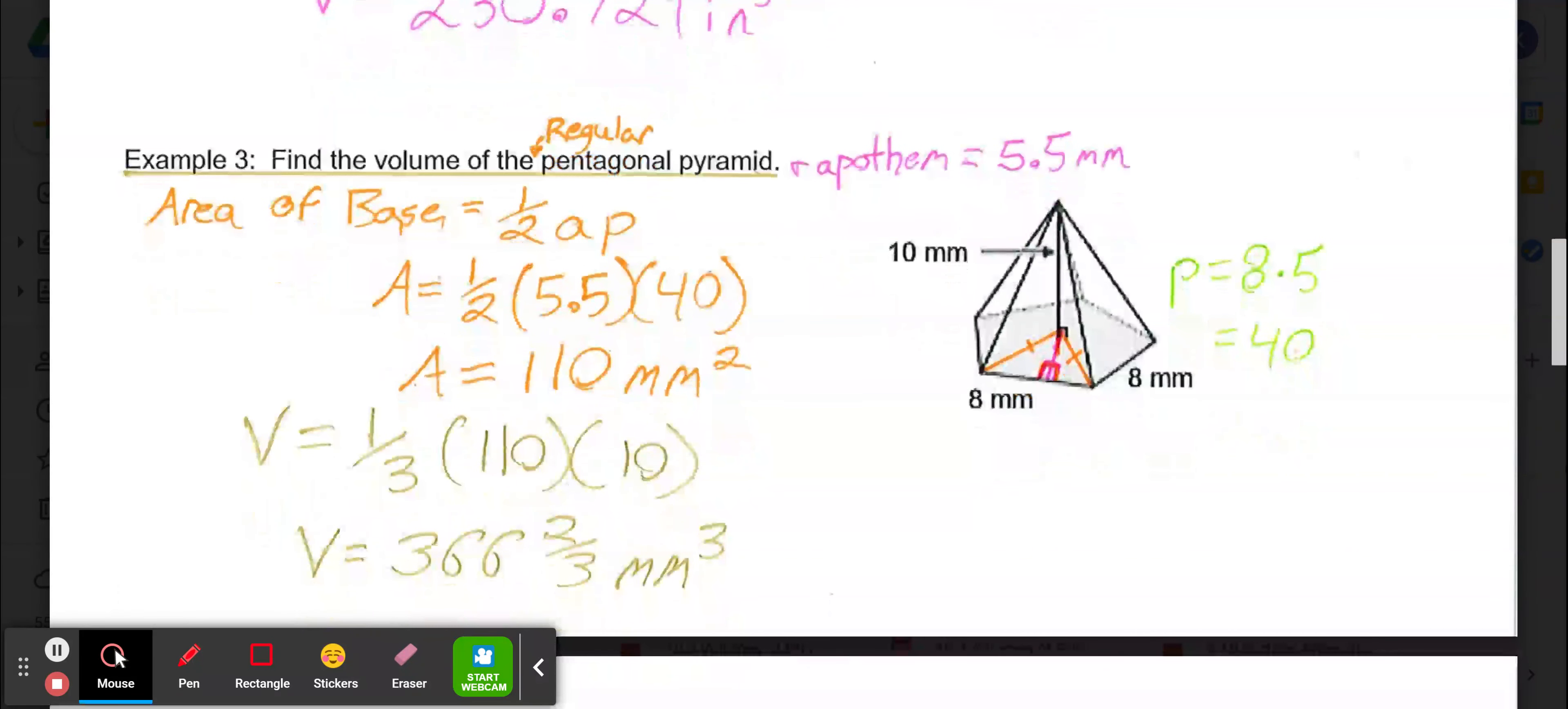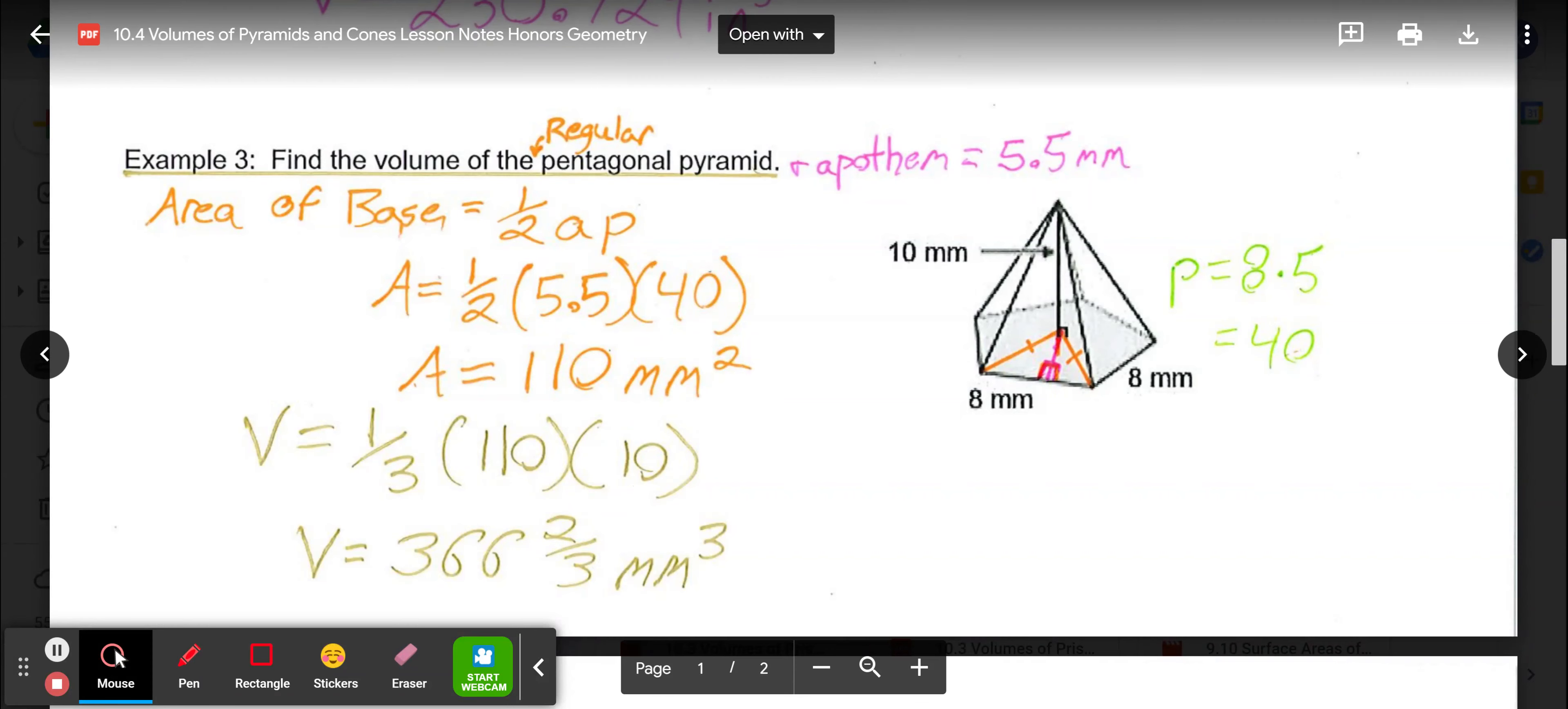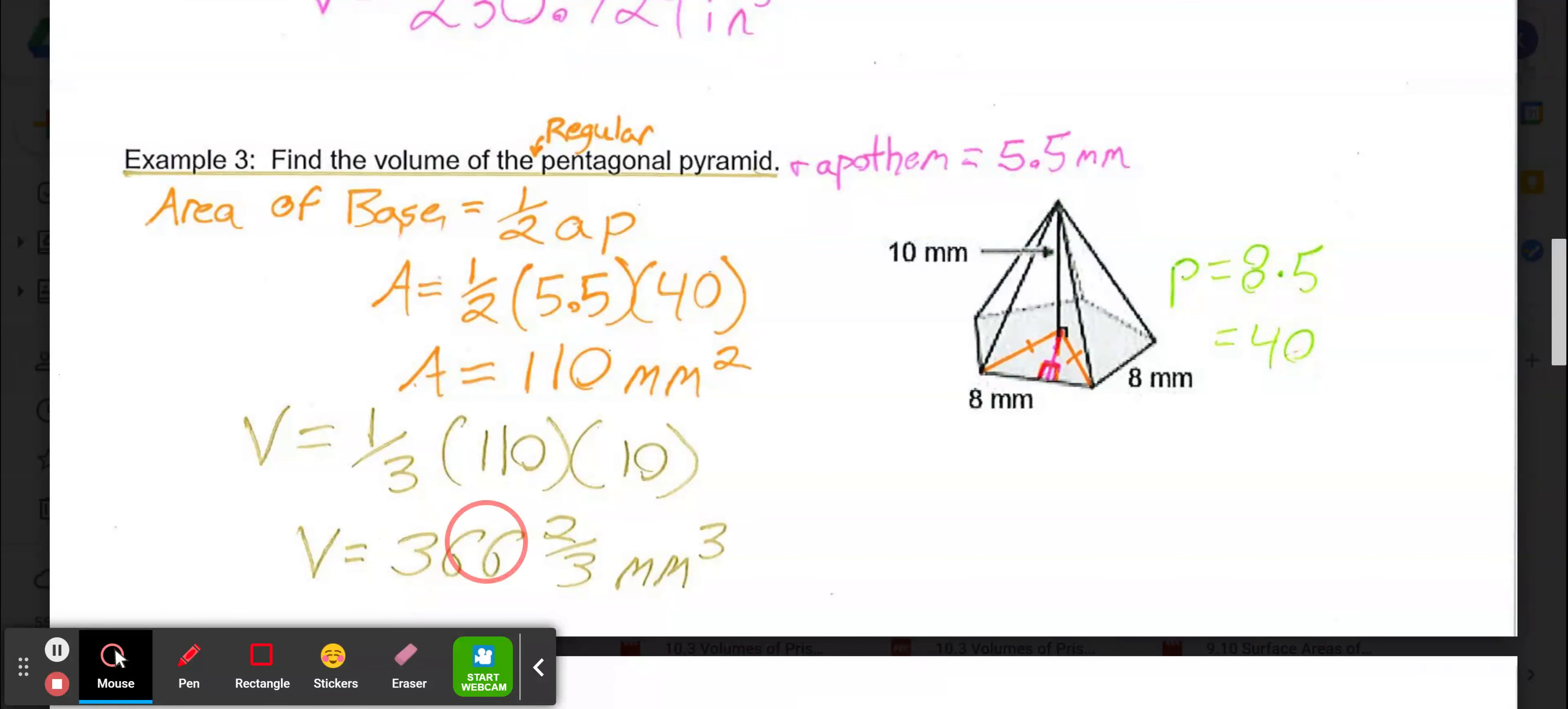Then putting that in for volume, one-third multiplied by that 110 area of the base multiplied by our height which would be 10 millimeters, giving us a volume of 366 and two-thirds cubic millimeters or millimeters cubed.